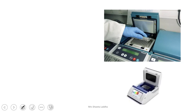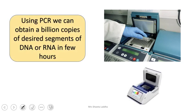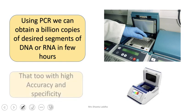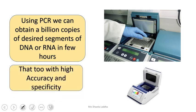This is how the PCR machine looks like. Using this PCR machine, we can obtain billion copies of desired segments of DNA or RNA in very little time. In few hours, from one sample of DNA, we can get billions of copies with great accuracy and specificity. There are very rare chances of any mistake in nucleotide sequences.